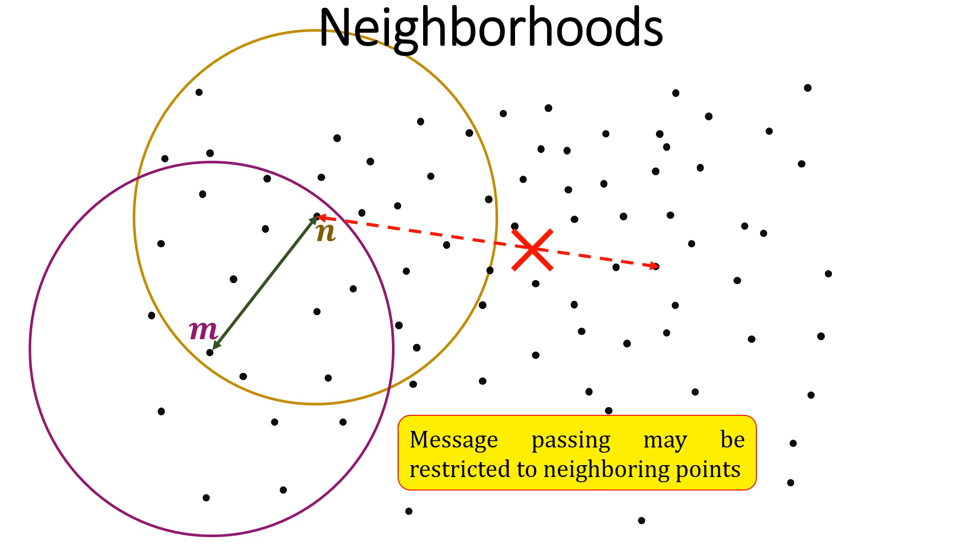However, n and some other point here cannot communicate with one another, because this point here is outside the local neighborhood of the point n.